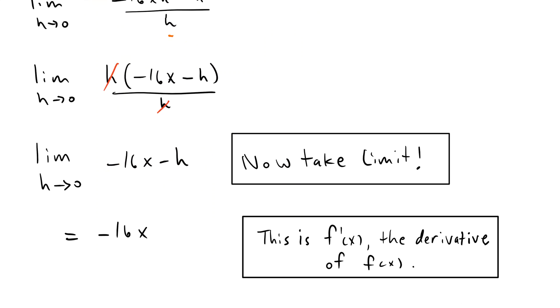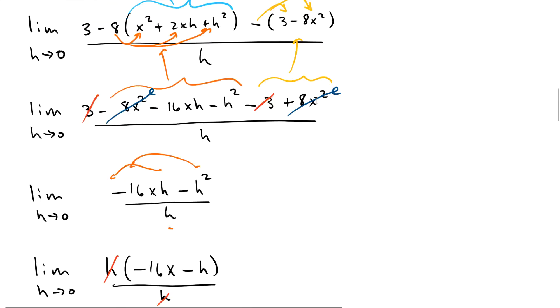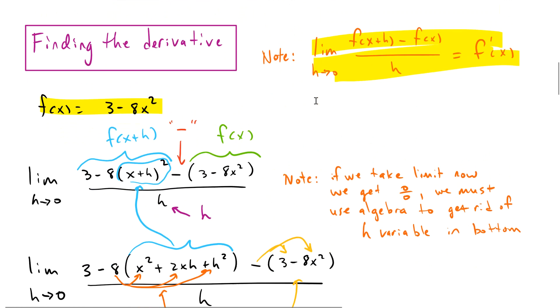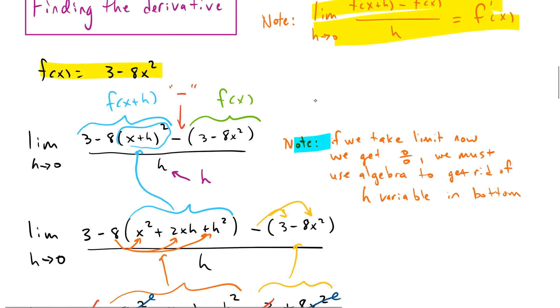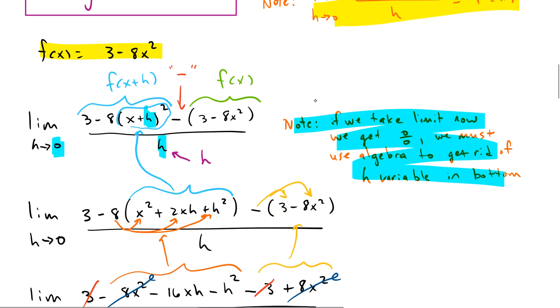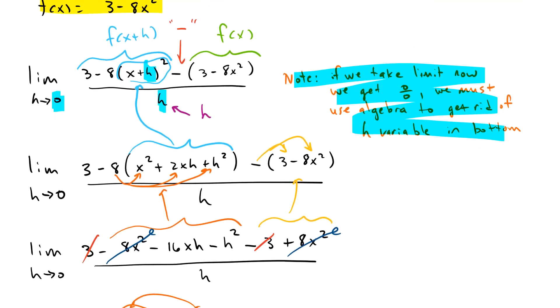So we should probably ask ourselves, why didn't we just take the limit to begin with? Well, if we look up here and we look at the note here, if we had just taken the limit to begin with, then the zero would have been put in for h there and there. And the numerator would have gone to zero and the denominator would have gone to zero. And we would have had an indeterminate form. So we go through all of this algebra to get rid of that h in the denominator.